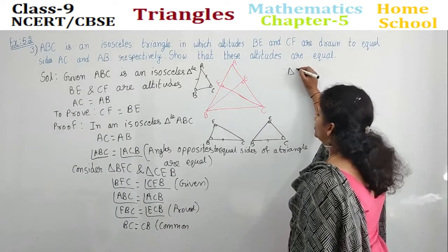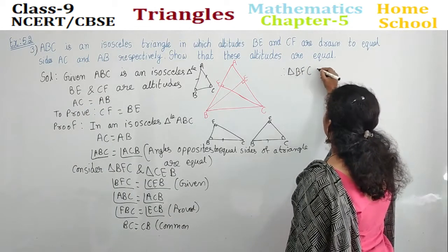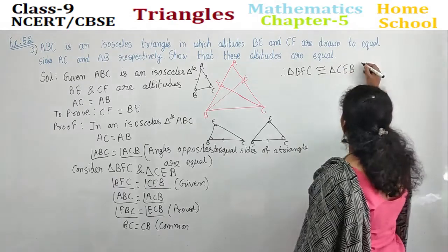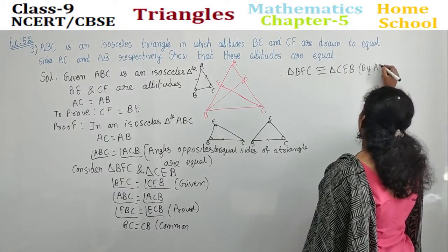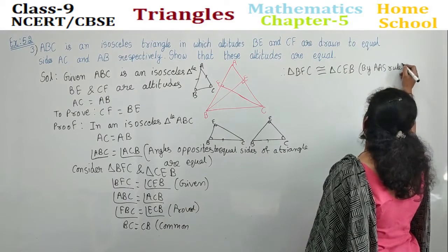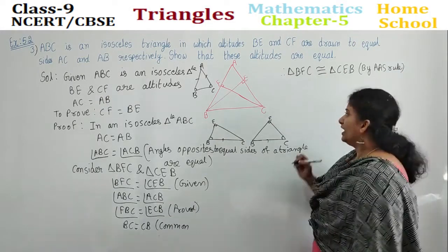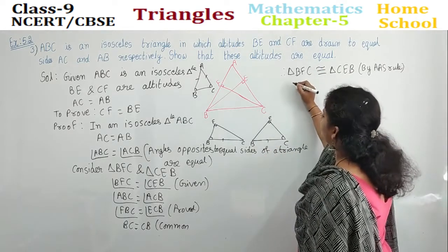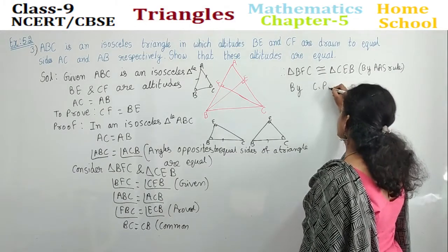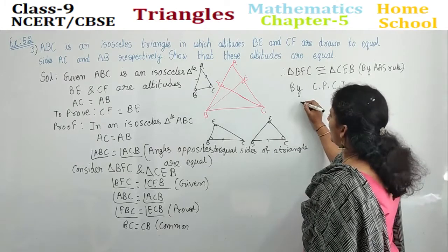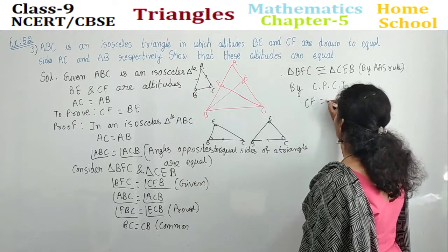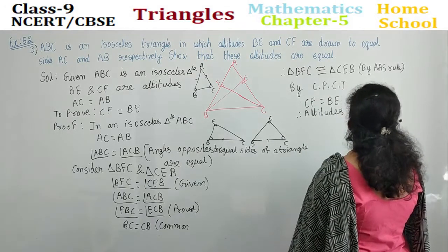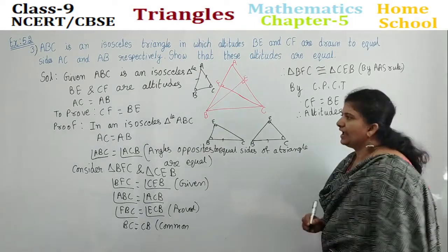Therefore triangle BFC is congruent to triangle CEB by the angle-angle-side rule. I can say these two triangles are congruent. If they are congruent, by CPCT I will say that CF is equal to BE. Therefore the altitudes are equal. Hence it is proved.